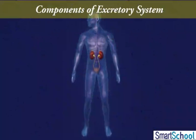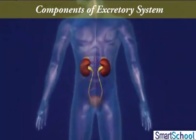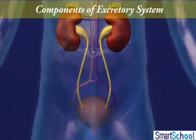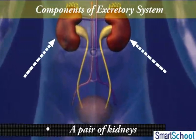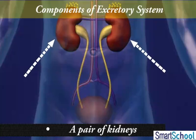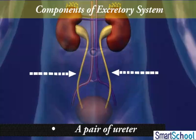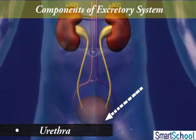To understand the excretory system of human beings, we must be aware of its components. The main components of the human excretory system are a pair of kidneys located in the lower part of the abdominal cavity, one on either side of the backbone, a pair of ureters, a urinary bladder, and a urethra.